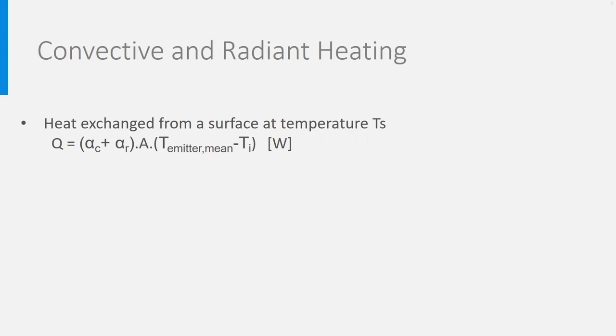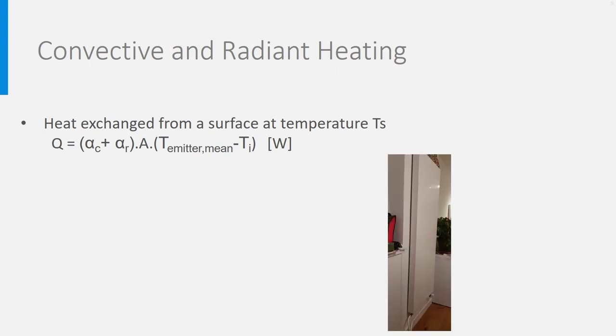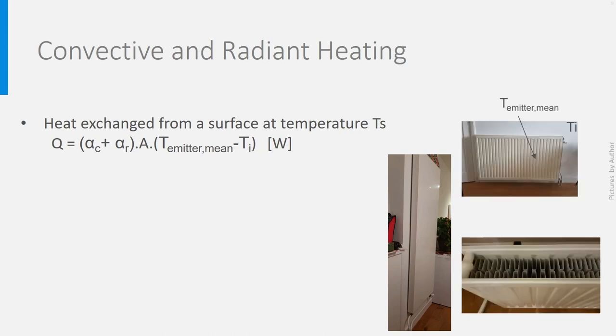In some cases, the emitter has just one flat plate, like this one. In other cases, the plate is corrugated, like on the radiator above. Additional plates are added, increasing this way the effective heat transfer surface for convection.